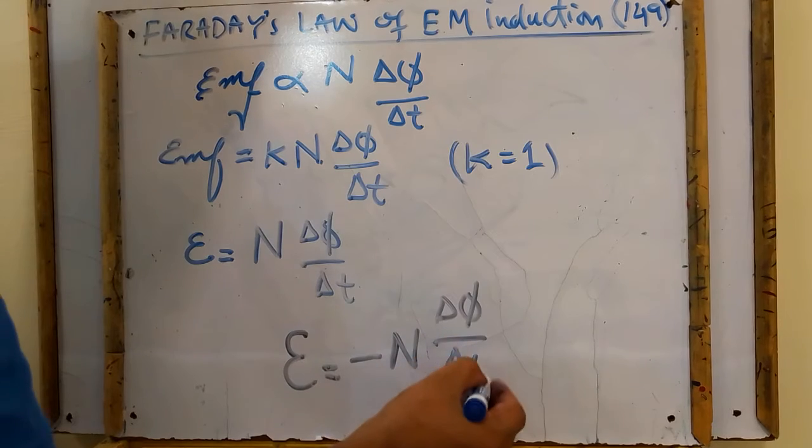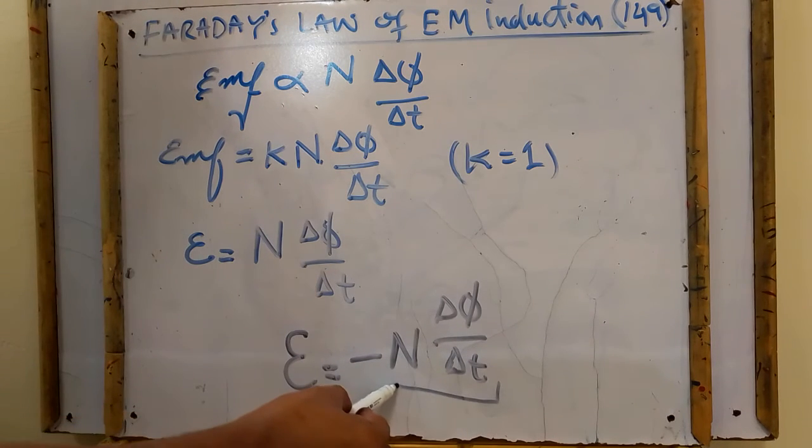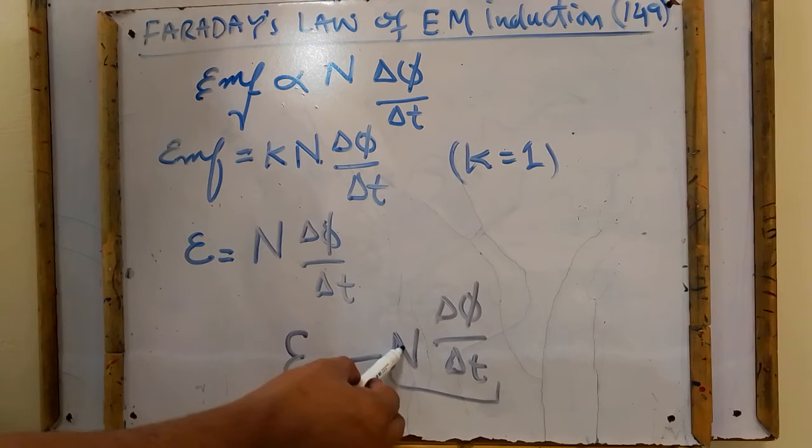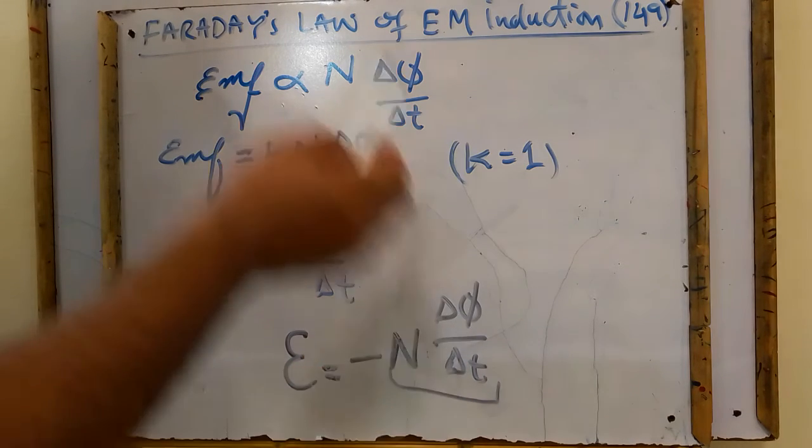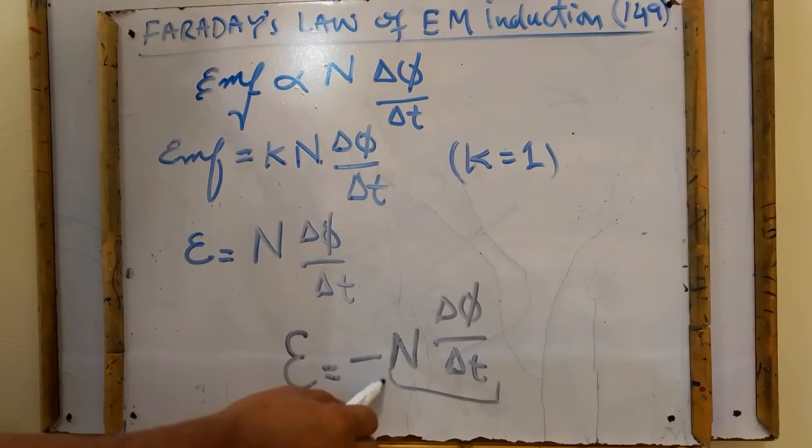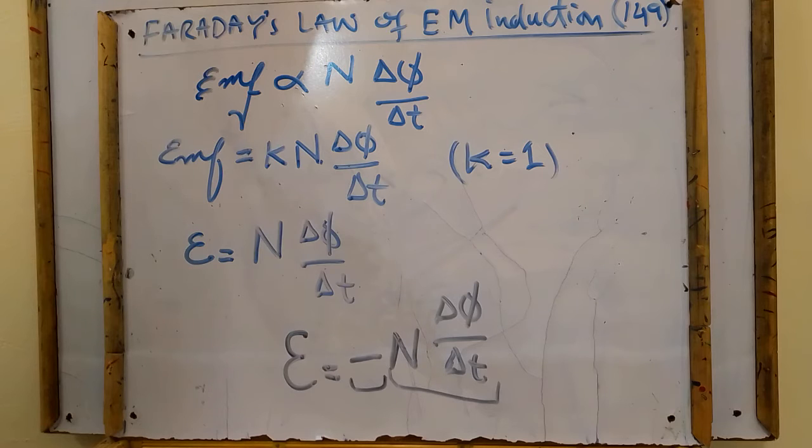So EMF is equal to minus N delta phi divided by delta T. This part of the equation shows that magnitude of the EMF is equal to N number of loops in the coil times rate of change of the flux in the coil. And this negative sign was explained by another scientist, which is called Lenz's law.